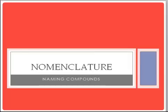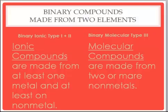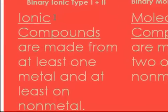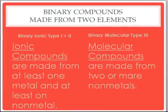The name of today's film is called Nomenclature, and nomenclature is the way we name compounds. Binary compounds are made from just two elements. There are three types: binary ionic type 1 and type 2, and binary molecular, which are called type 3. Today's film is going to focus primarily on ionic compounds, type 1 and type 2 — they're made from at least one metal and at least one nonmetal. In another video we'll talk about molecular compounds, type 3, which are made from two or more nonmetals.